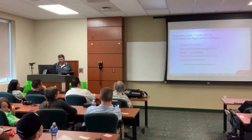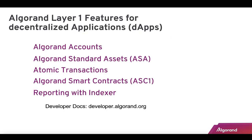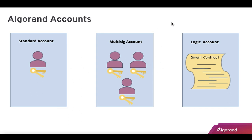Layer one is right on the blockchain, part of the consensus algorithm. What's involved: at a basic level we have Algorand accounts, ASAs — Algorand Standard Assets — which are your fungible and non-fungible tokens, atomic transactions with guaranteed delivery, Algorand smart contracts, and the indexer. Let's go over each of these.